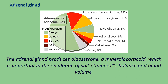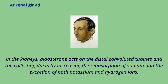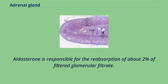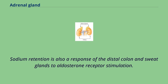The adrenal gland produces aldosterone, a mineralocorticoid, which is important in the regulation of salt balance and blood volume. In the kidneys, aldosterone acts on the distal convoluted tubules and the collecting ducts by increasing the reabsorption of sodium and the excretion of both potassium and hydrogen ions. Aldosterone is responsible for the reabsorption of about 2% of filtered glomerular filtrate. Sodium retention is also a response of the distal colon and sweat glands to aldosterone receptor stimulation.